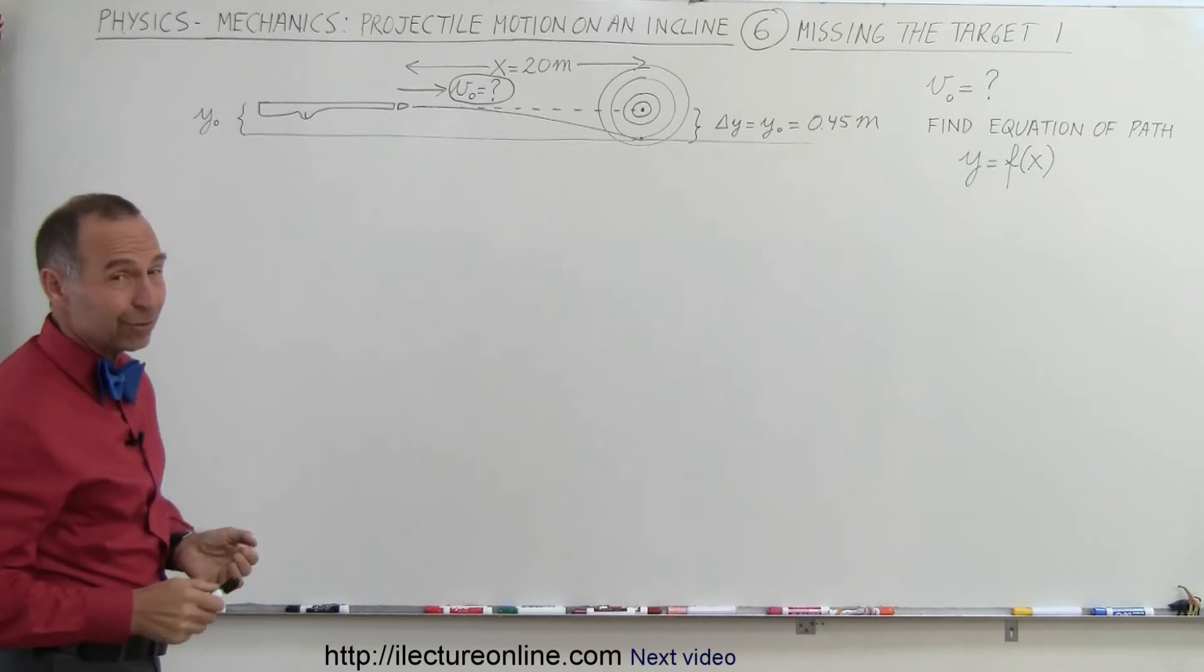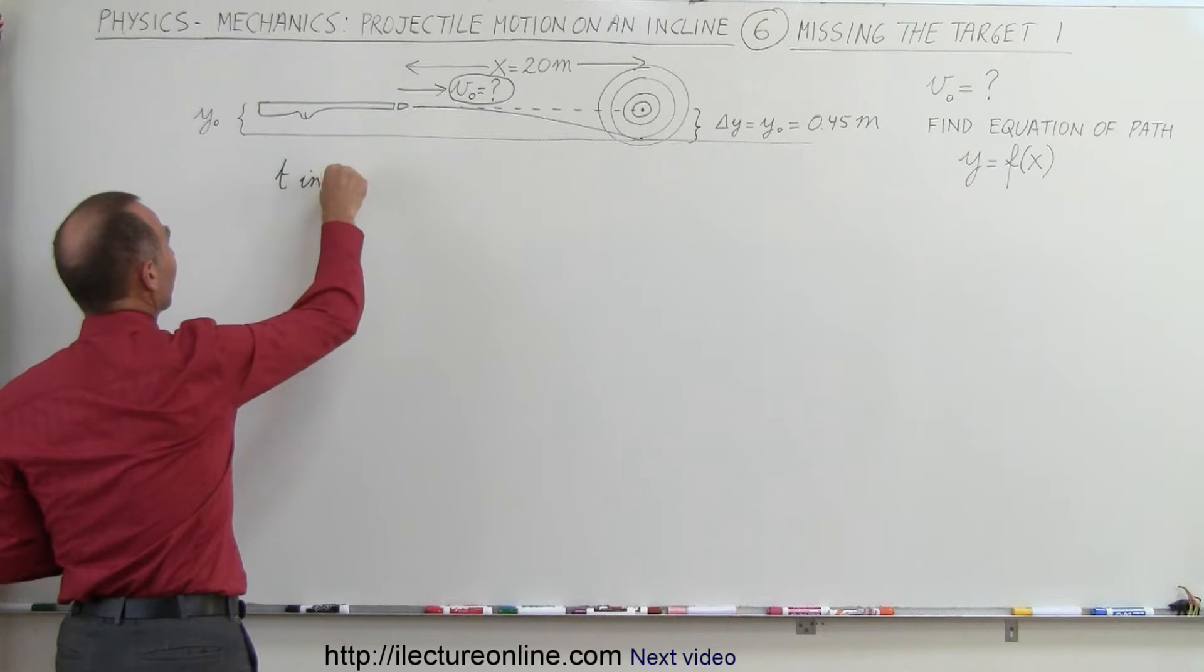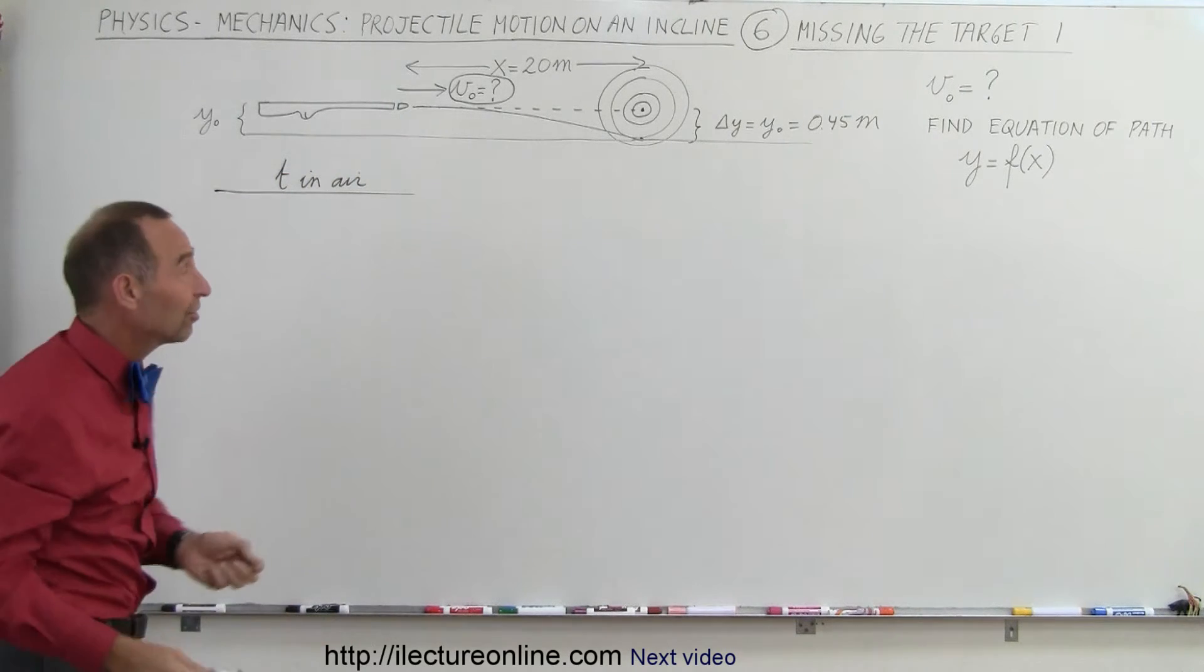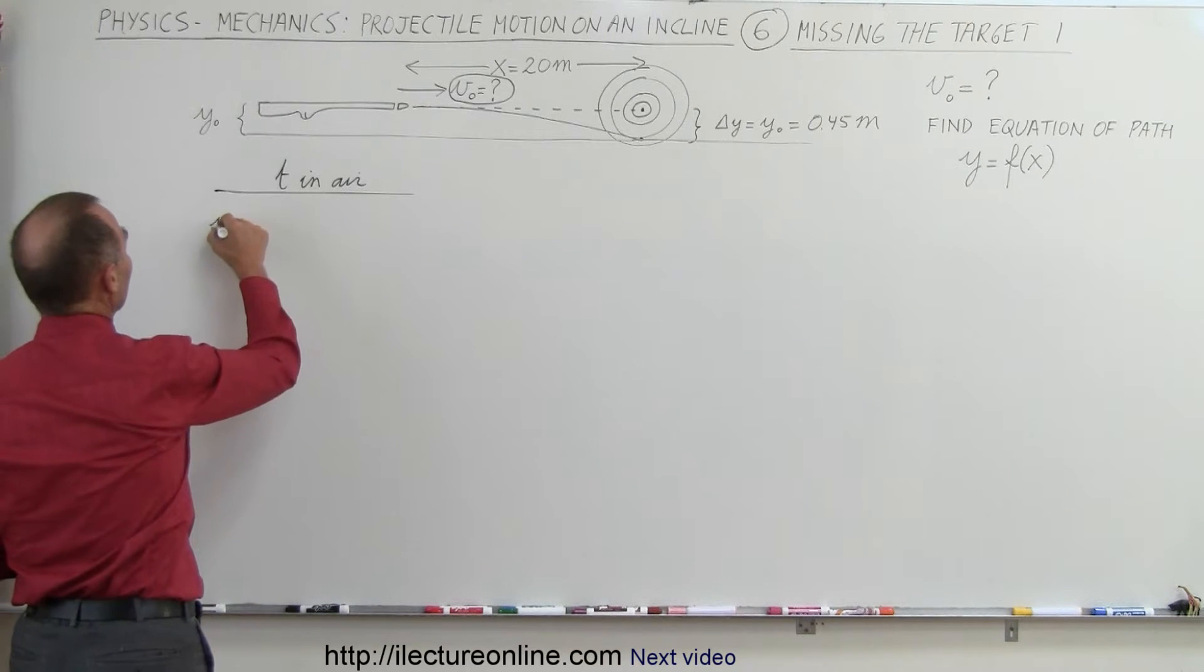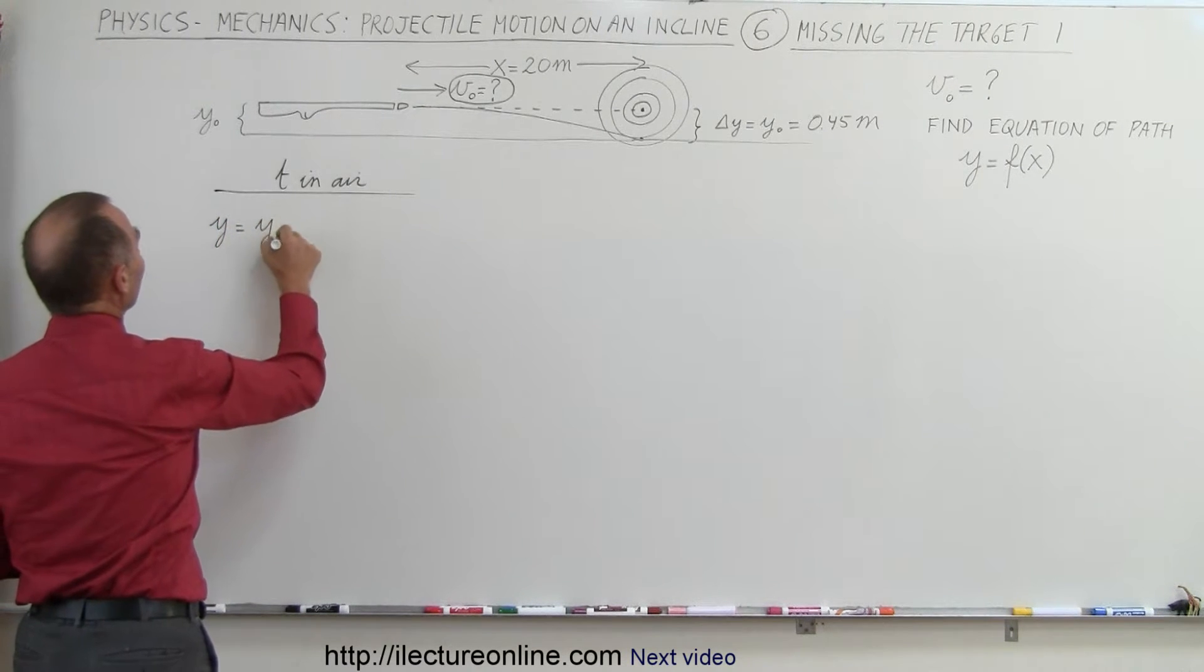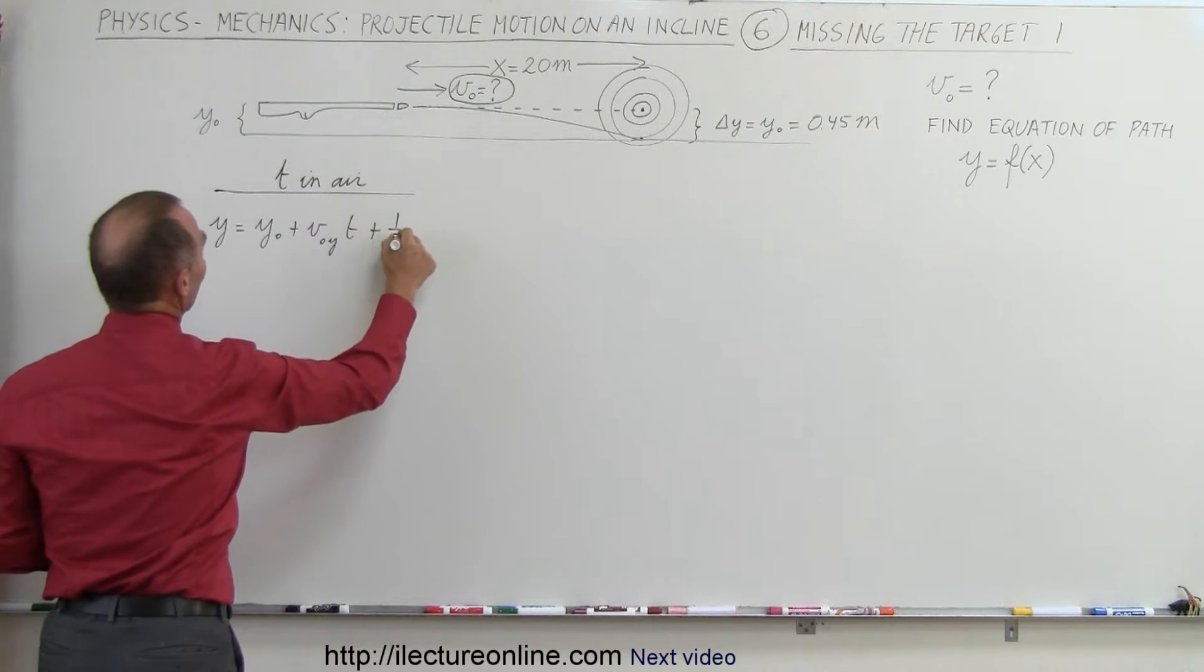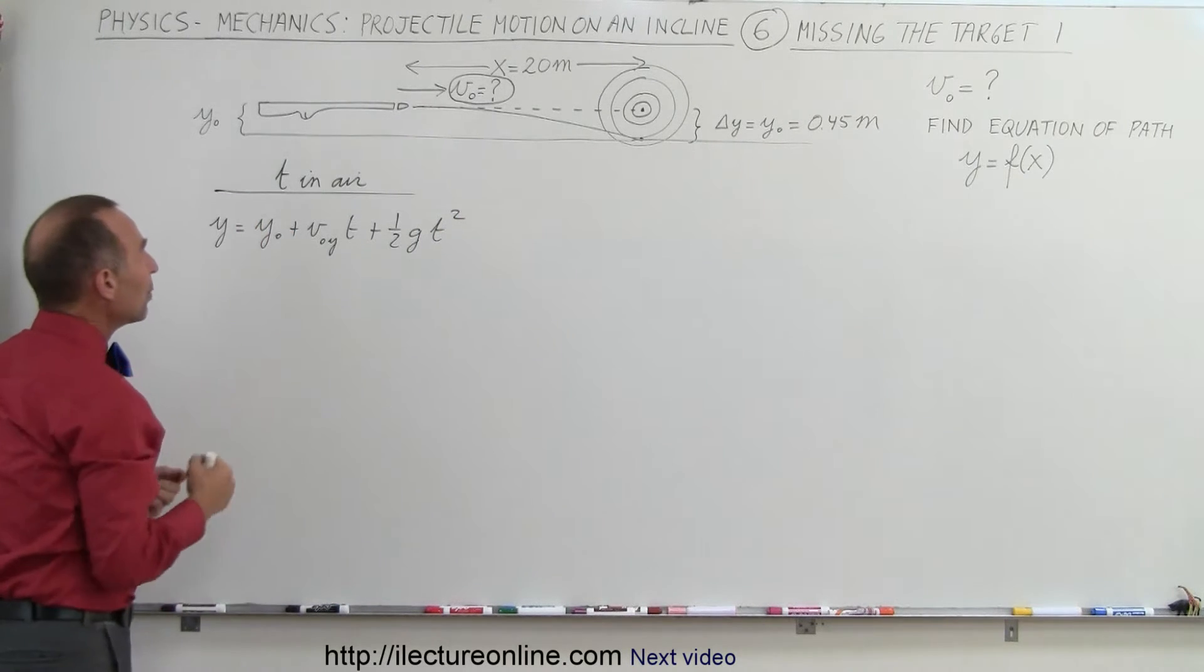And if in doubt, always try this one: Time in the air. Of course, you probably have seen this one already a lot of times, and that's usually the way you want to approach these types of problems. And let's do the y direction first. We get y equals y sub naught plus v sub naught in the y direction times time plus one half g t squared.